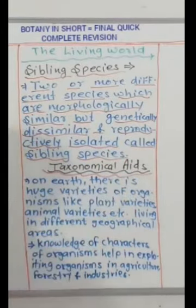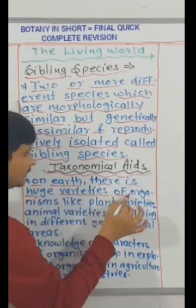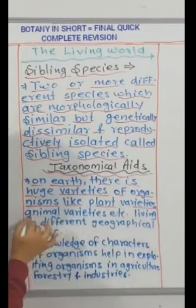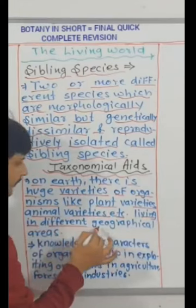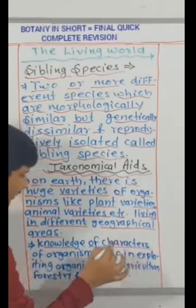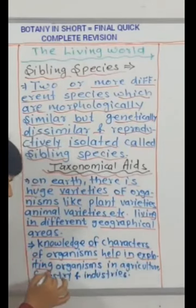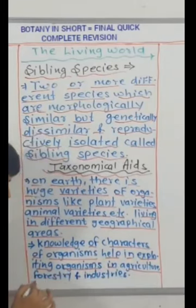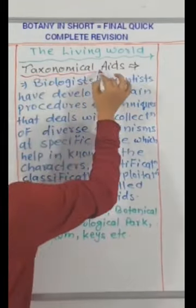Taxonomical aids. On Earth there is a huge variety of organisms like plant varieties, animal varieties, etc., living in different geographical areas. Knowledge of characters of organisms helps in exploiting organisms in agriculture, forestry, and industries.